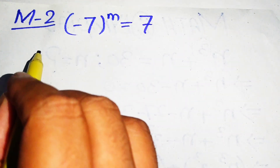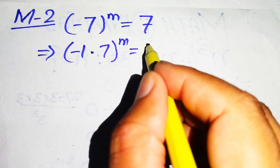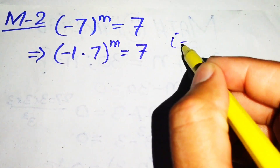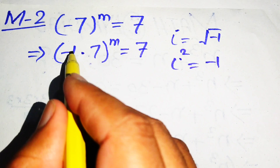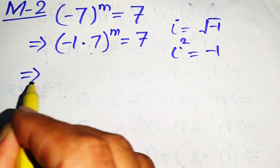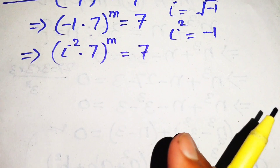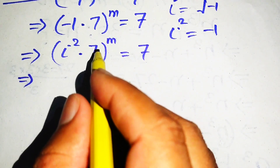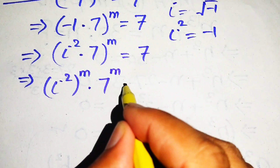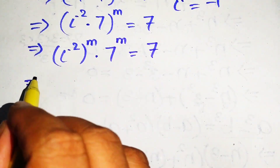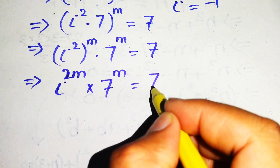Now we move to method two. We copy down the given equation and rewrite it as minus 1 multiplied by 7, its whole power m equals to 7. We know that iota equals the square root of minus 1, and iota squared equals minus 1. So we replace minus 1 with iota squared, giving (iota squared multiplied by 7) to the power m equals 7. Applying the exponential law, we separate the exponent to get iota squared to the power m times 7 to the power m equals 7, which simplifies to iota to the power 2m multiplied by 7 to the power of m equals 7.